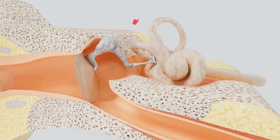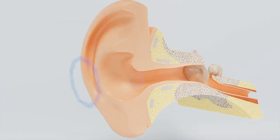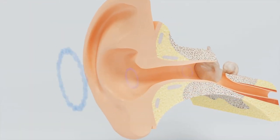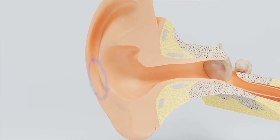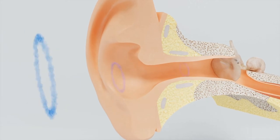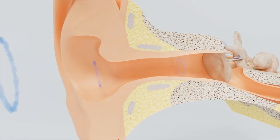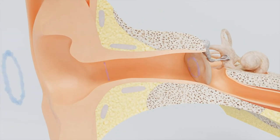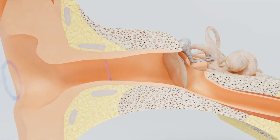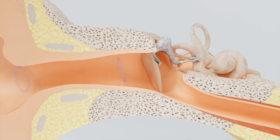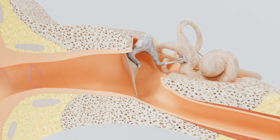The inner ear, or cochlea, is a fluid-filled tube coiled like a snail and lined with thousands of tiny hairs. Each movement of the middle ear bones creates a fluid wave in the inner ear. The movement of the fluid causes the hairs to move and convert the signal into electrical energy that is passed on to the brain and interpreted as sound.